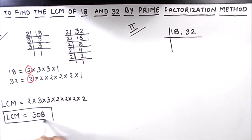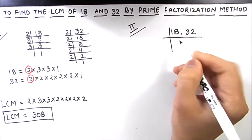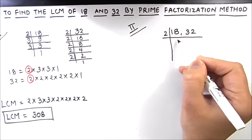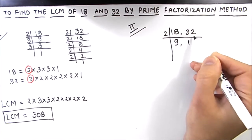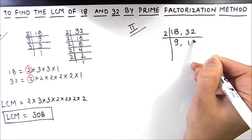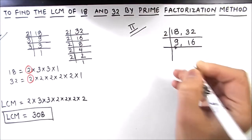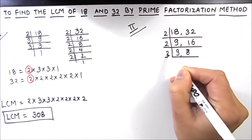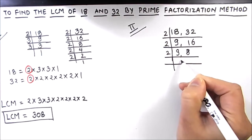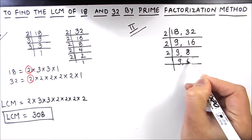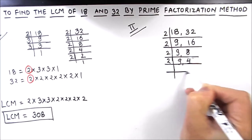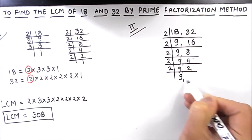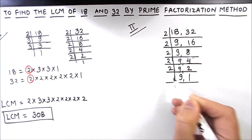Now let's find the LCM using the single ladder method. Here we divide both numbers together. We use the first prime number, 2: 18 ÷ 2 = 9, and 32 ÷ 2 = 16. Then 2 again: 16 ÷ 2 = 8, 9 stays as is. Then 2 again: 8 ÷ 2 = 4, then 4 ÷ 2 = 2, then 2 ÷ 2 = 1. Now we divide 9 by 3: 3 × 3 = 9.